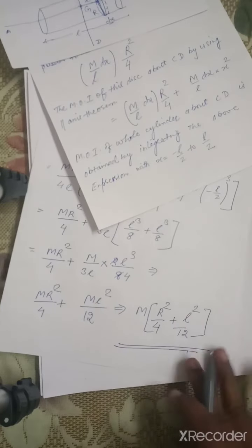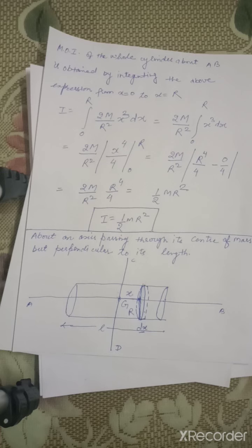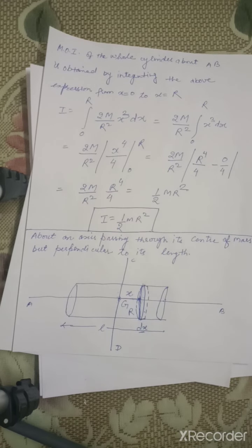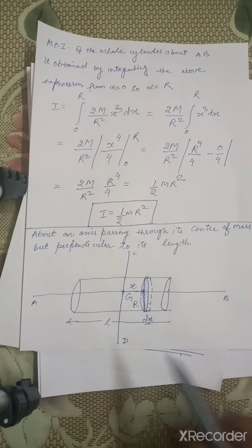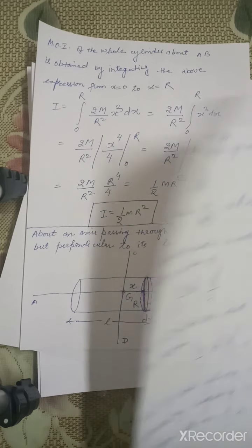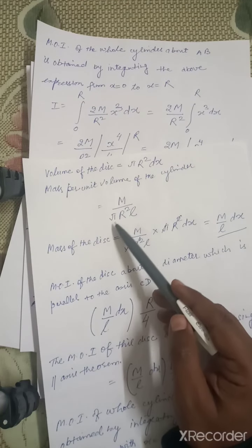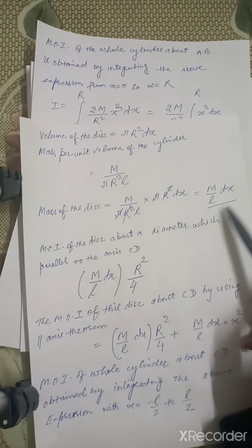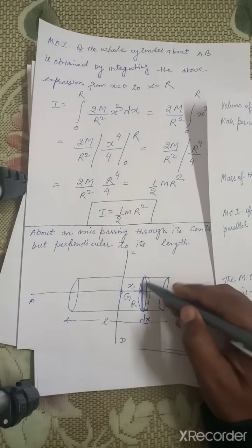This is the final result. So the moment of inertia of the solid slender about an axis through its center of mass perpendicular to its length is M(R²/4 + L²/12). The axis CD is perpendicular to the length and passes through the center of mass. We imagined the slender as many thin discs side by side. For one small disc at distance x from the center, its width is dx, and its volume is πR²·dx.